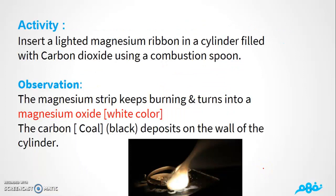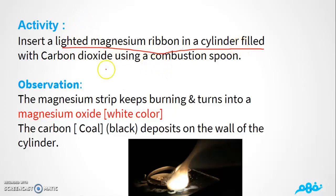Now we're going to do an activity. We will insert a lighted magnesium ribbon into a cylinder filled with carbon dioxide. The observation is: the magnesium strip keeps burning and turns into magnesium oxide, which is white in color.